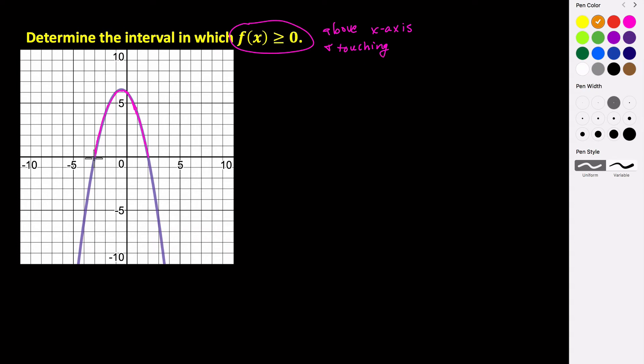Our graph is equal to zero here at this point, and then here at this point. So when x is equal to negative 3 and positive 2.